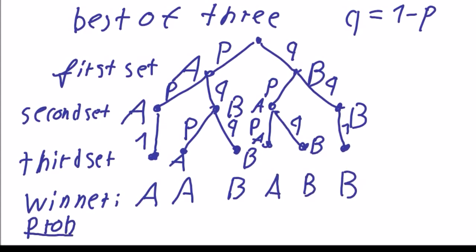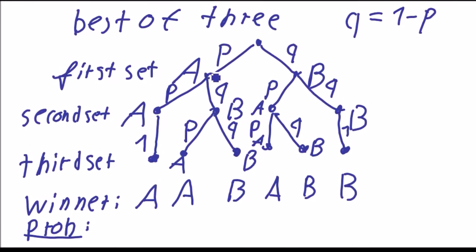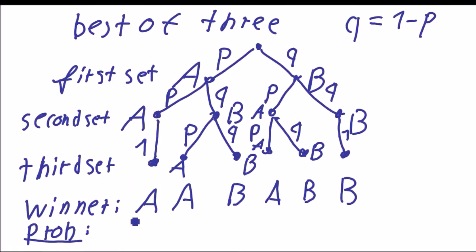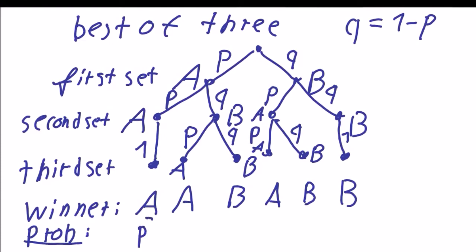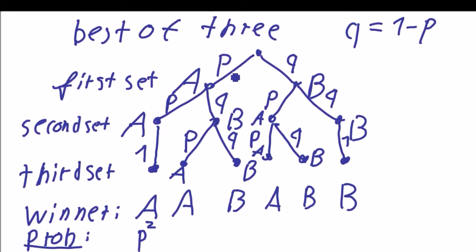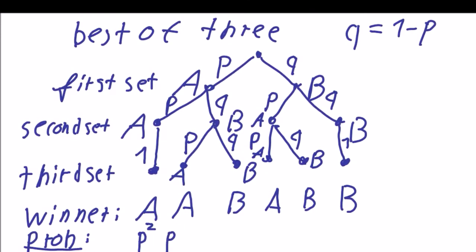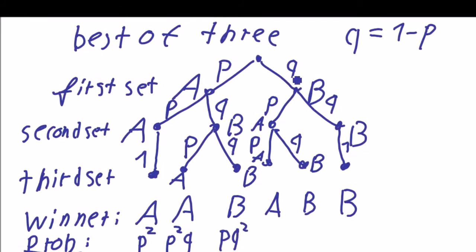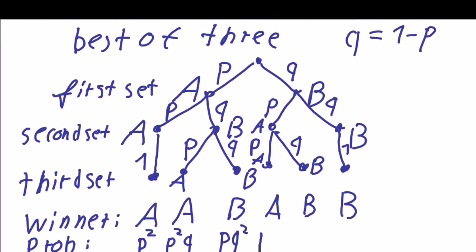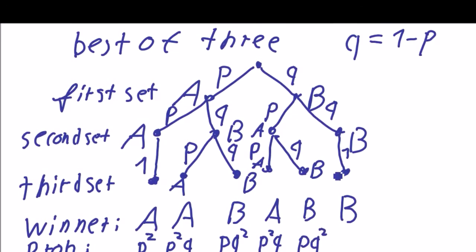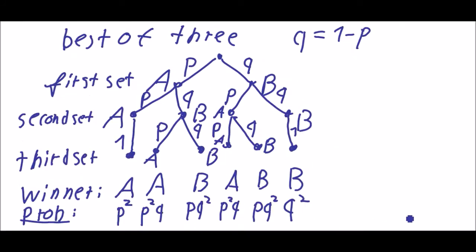Now we can have a look at the probabilities. This is P for the first set and P for the second set and 1 for the third set which isn't played out, so we have P to the square, so they multiply along that path. And in the second line we have P, Q and P along this so it's P squared Q. P, Q squared, Q, P squared Q and here we have Q, P, Q, P, Q squared and here we have Q squared.